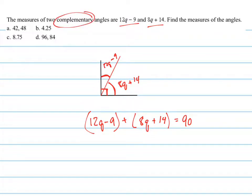So what we need to do now to find out what those angles are is solve this equation, this algebra equation, linear equation specifically for q. So adding like terms, you get 20q plus, 14 minus 9 is 5, 20q plus 5 equals 90.